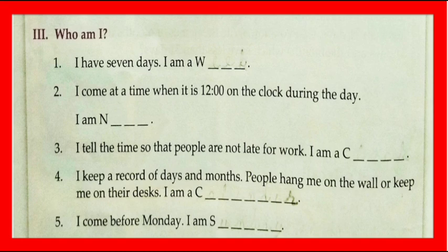Number 3: I tell the time so that people are not late for work. I am a clock. Number 4: I keep a record of days and months. People hang me on the wall or keep me on their desk. I am a calendar.